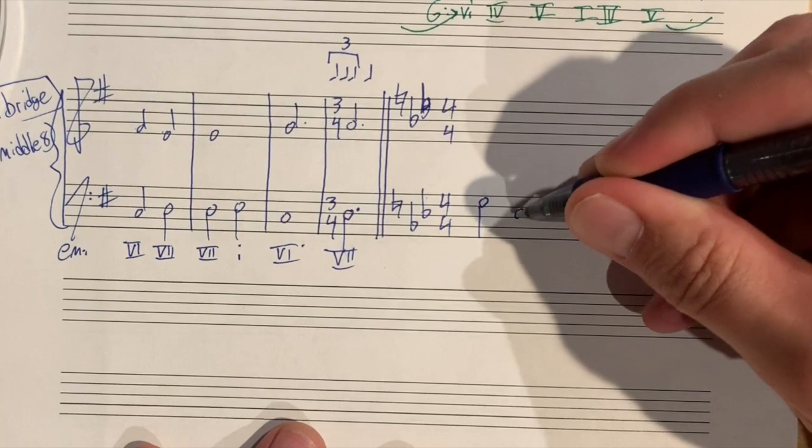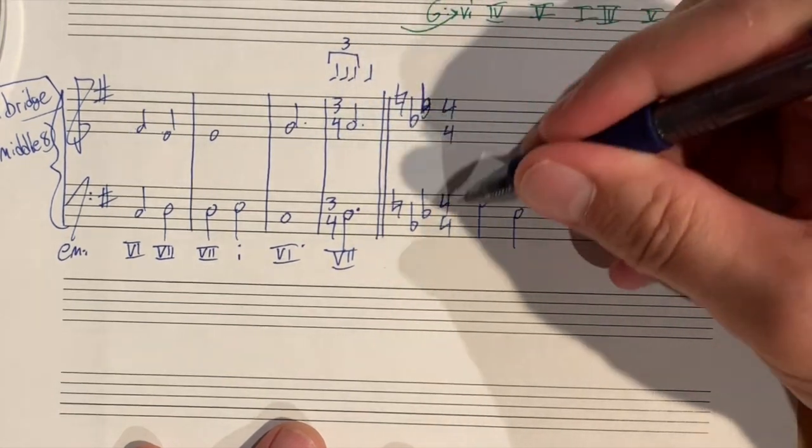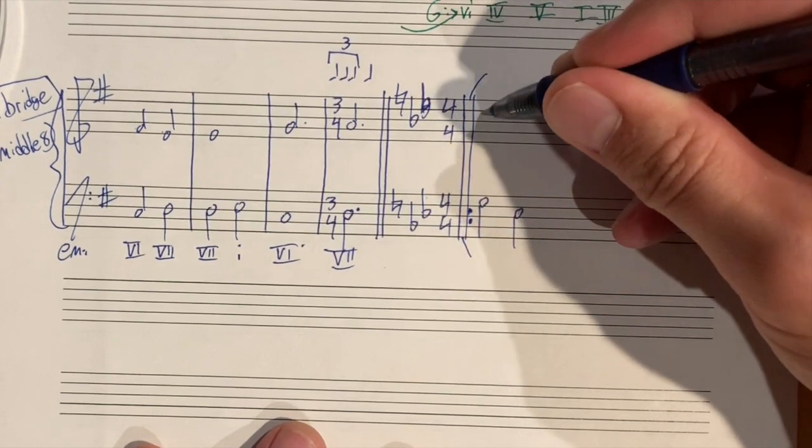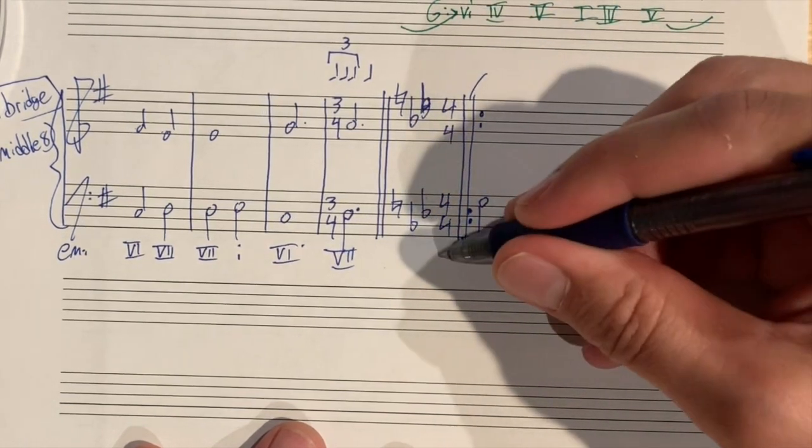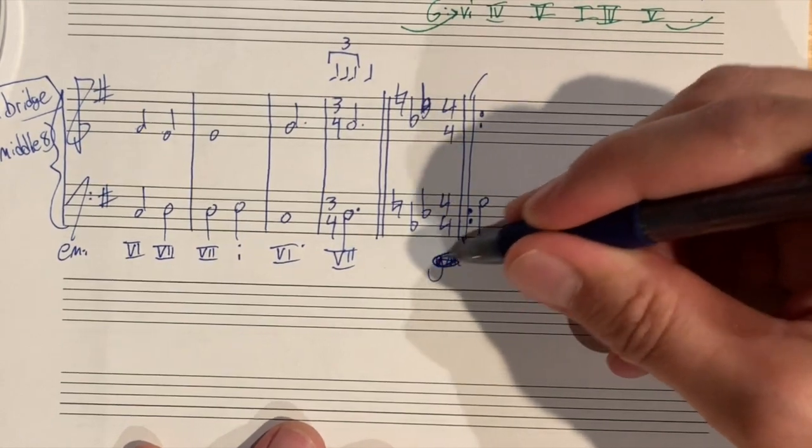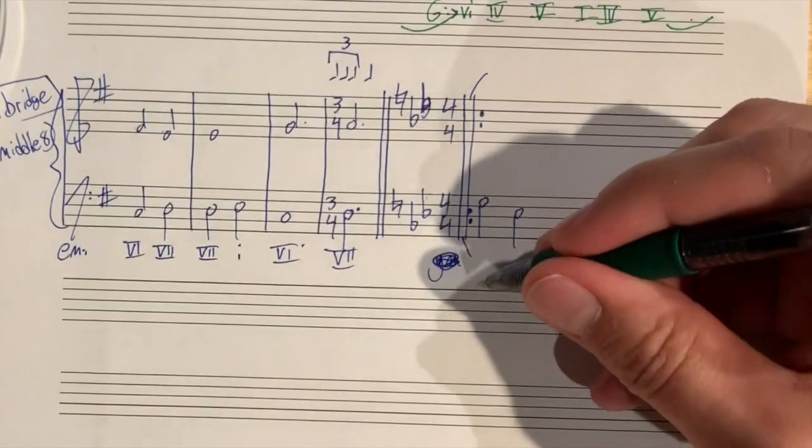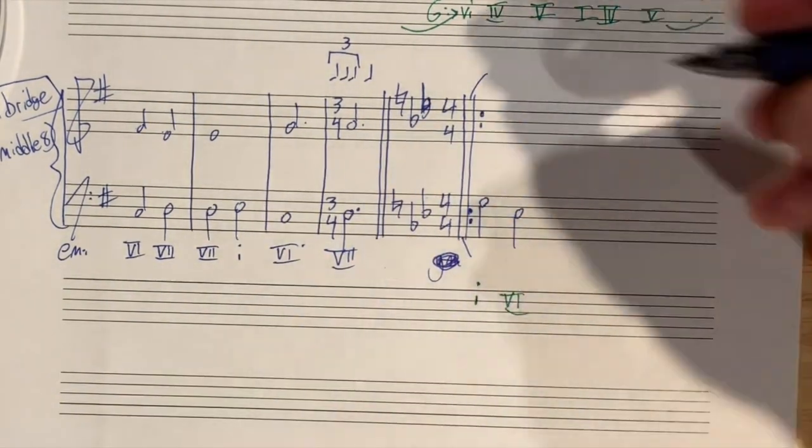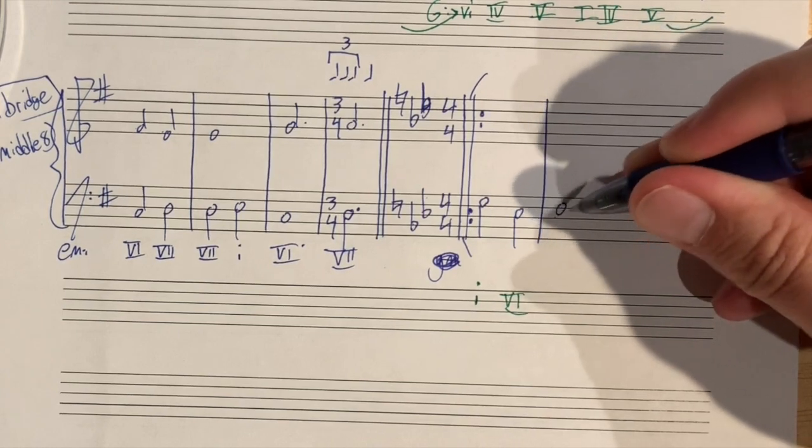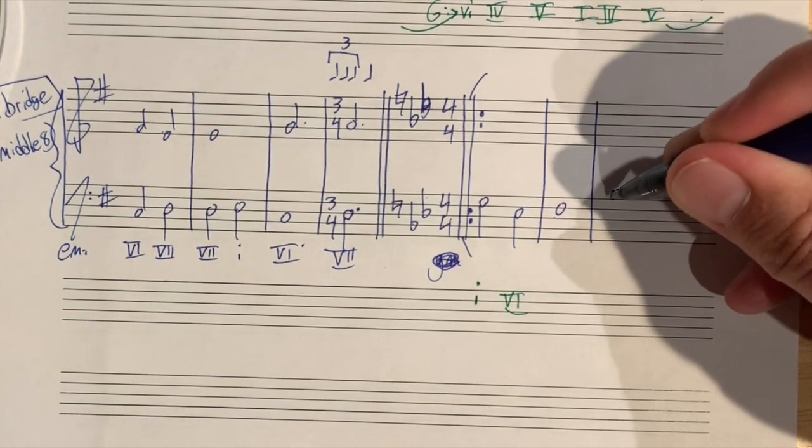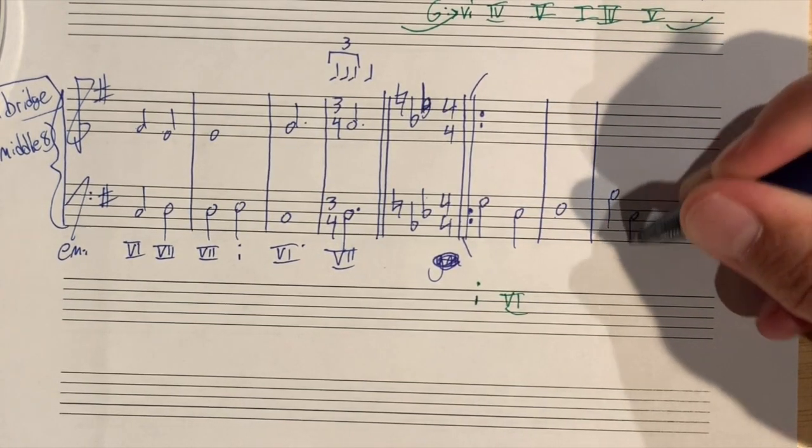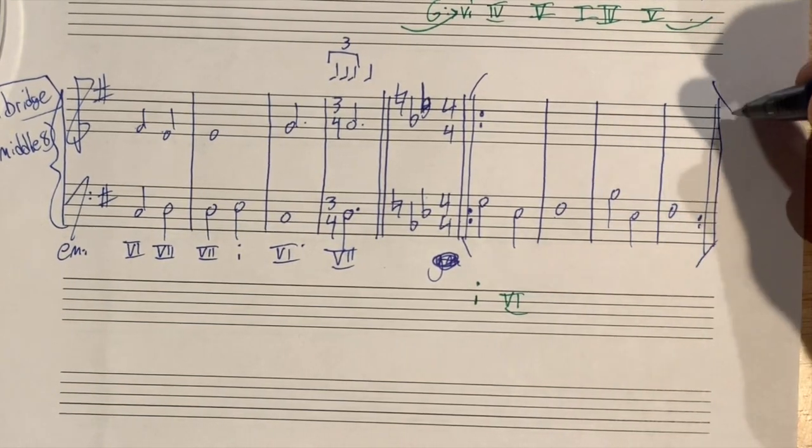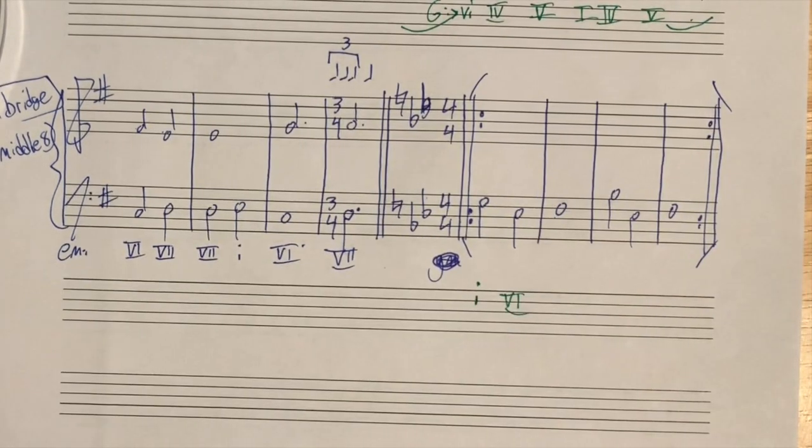In the key of G minor, we end up just doing the chorus as usual. The same way we've been doing the chorus. Where we go G minor now. Let me write this down here. G minor, we have a one chord. A six chord, which is an E flat chord. An F chord. And then a B flat chord. An E flat chord. An F chord. And it just keeps repeating this chorus in this new key until the end of the song.